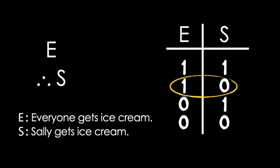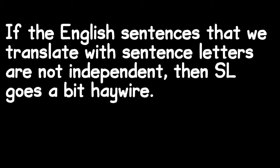The problem is that in SL, E and S are atomic sentences. So even though we used them to translate things that were related in English, the connection is entirely lost in SL. If the English sentences that we translate with sentence letters are not independent, then SL goes a bit haywire. When this happens, there may be rows of truth tables which do not correspond to ways that things could possibly be. That means that SL can identify an argument as invalid, even though it's the translation of a valid English language argument, like the example we've just seen.